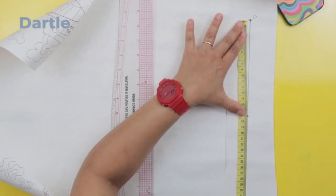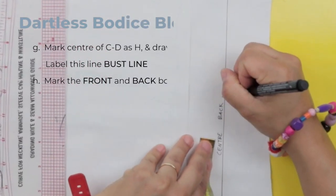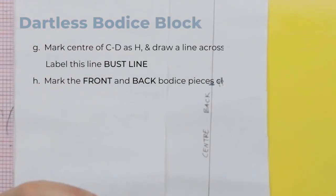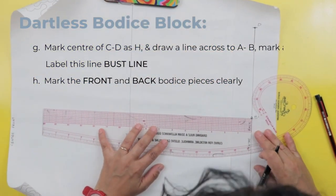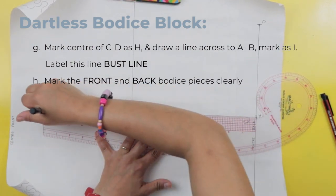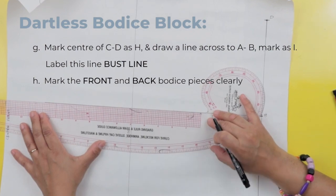The sideline will be marked E to F and then just draw a perpendicular line from F to A to join that to make it a nice rectangle. And then label center front on AB, the sideline as E to F and the center back from C to D. Now find the center of C to D and mark it as H. This will be your bust line. Draw a straight line from H, join it to the AB and mark that point as I. Also, while you're at it, mark the front and back bodice pieces clearly.